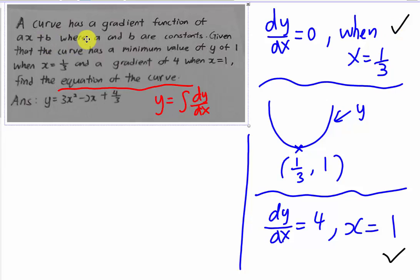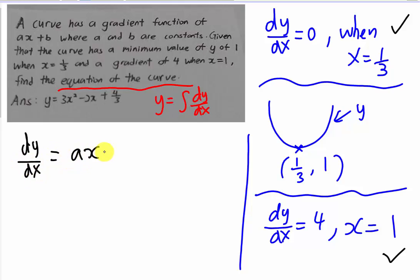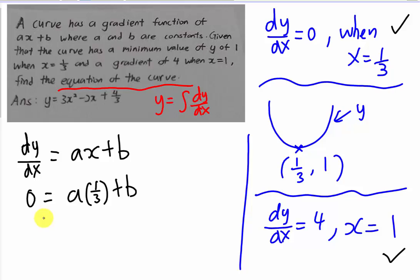Since dy/dx equals ax plus b, and dy/dx equals 0 when x equals 1/3, substituting gives: 0 equals a(1/3) plus b. So therefore b equals negative 1/3 a. I call this the first equation.